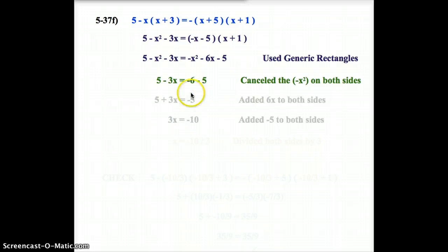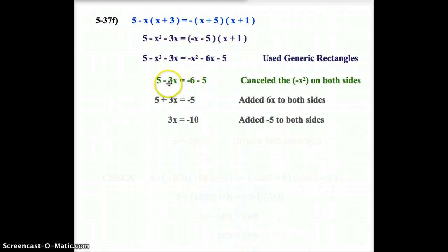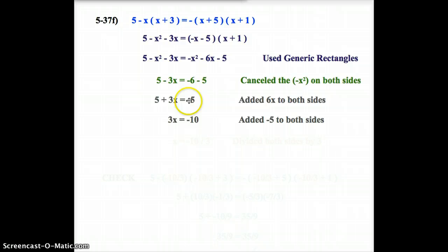In my next step, I'm going to add 6x to both sides to get this to cancel. When I add 6x to the negative 3x, I get positive 3x. So, I'm sitting here with 5 plus 3x equals negative 5.